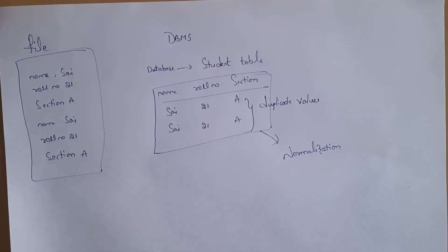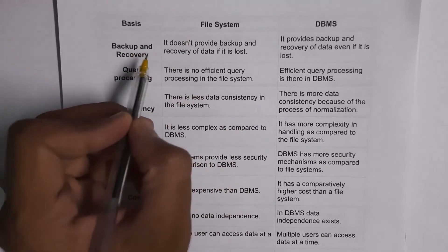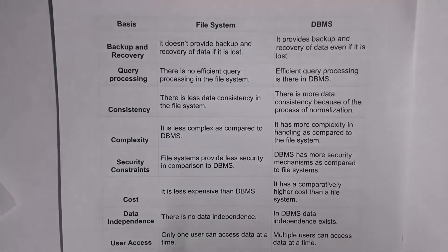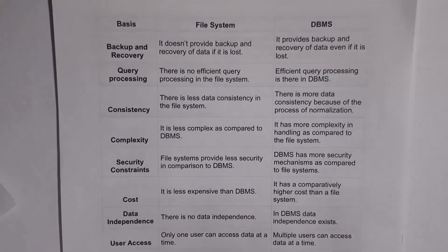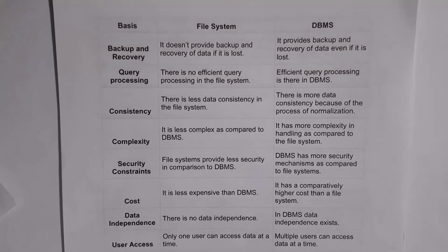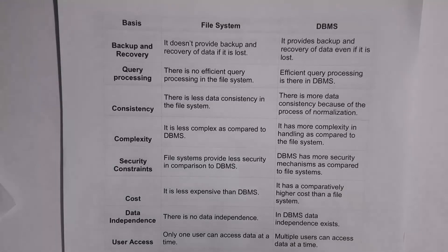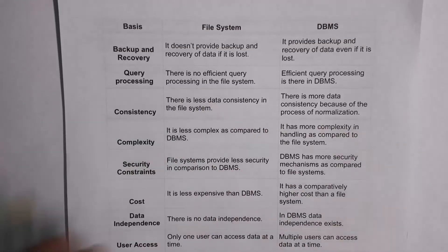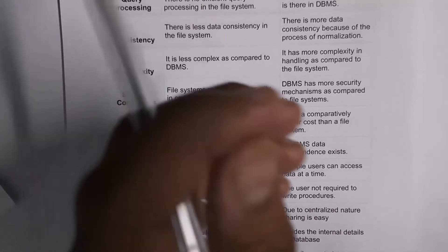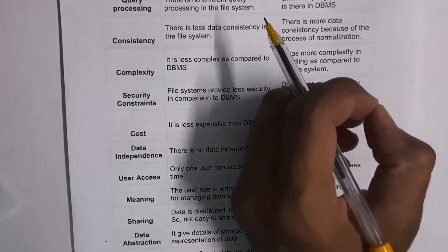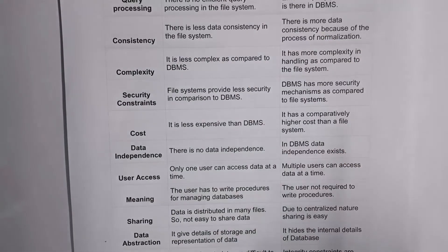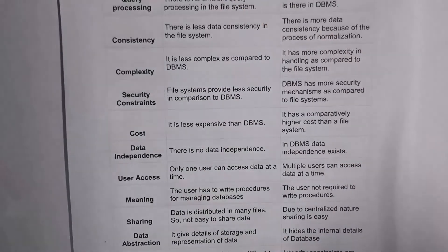In DBMS, there is a technique called normalization by which we can easily identify and remove duplicate values. If there are no duplicate values, data will be correct — that is, we can achieve data consistency in DBMS. File system will not provide any backup and recovery, whereas DBMS will provide backup and recovery. If we accidentally delete data from a file, we cannot restore it. But if we delete data from a database, we can easily restore it. There is no efficient query processing in the file system, whereas in DBMS there is efficient query processing — for example, to get a list of students who failed in an exam, we can simply write a query.